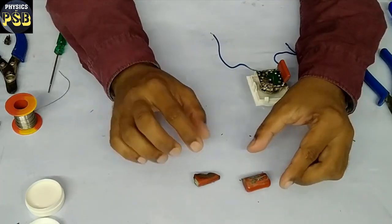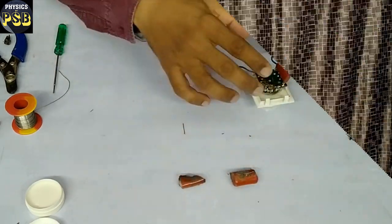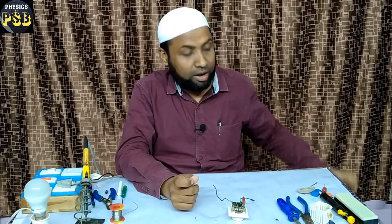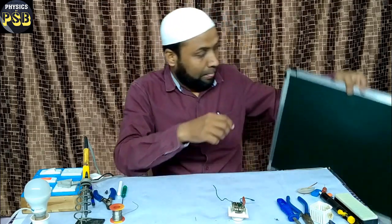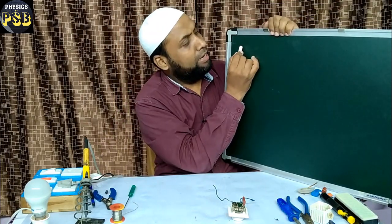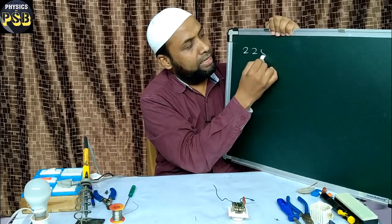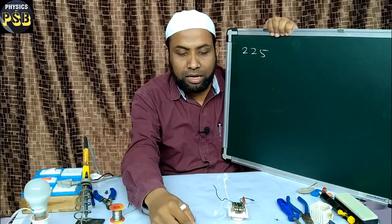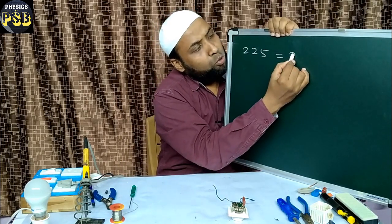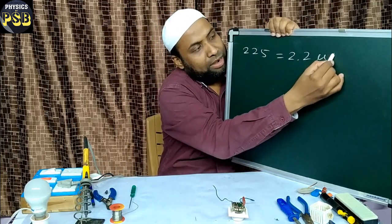Now let me tell you what these things mean. I will show you what these numbers in capacitors mean. Here I told you the letter 225 is mentioned in the damaged capacitor. 225 represents 2.2 microfarad.